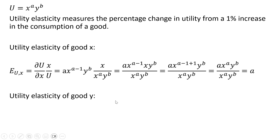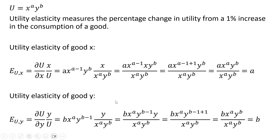As for the utility elasticity of good y, taking the partial derivative of the utility function with respect to good y, the exponent on the y term — b — comes down in front, and we subtract 1 from that exponent. Simplifying by adding up the exponents on the y terms, the minus 1 and plus 1 cancel, leaving us with b.